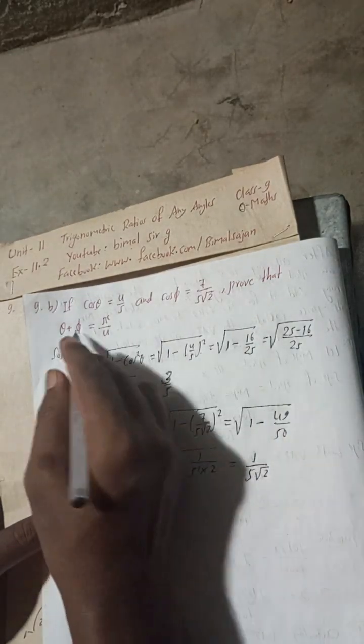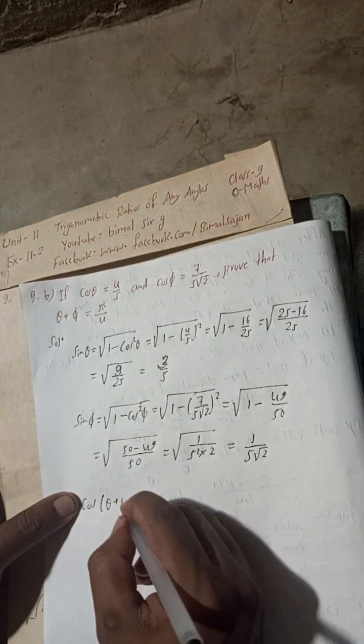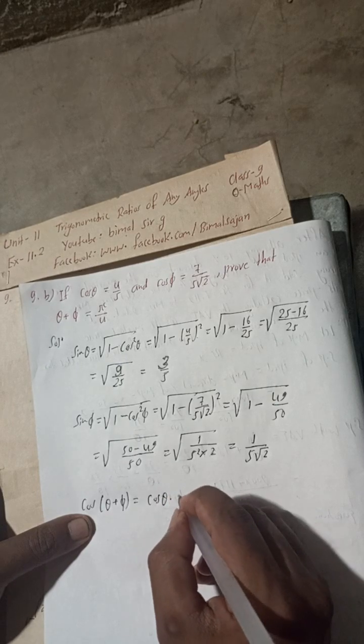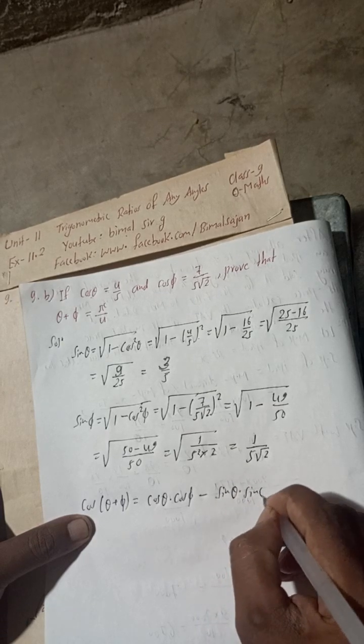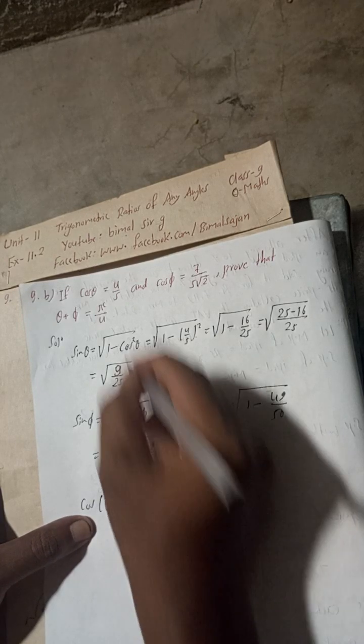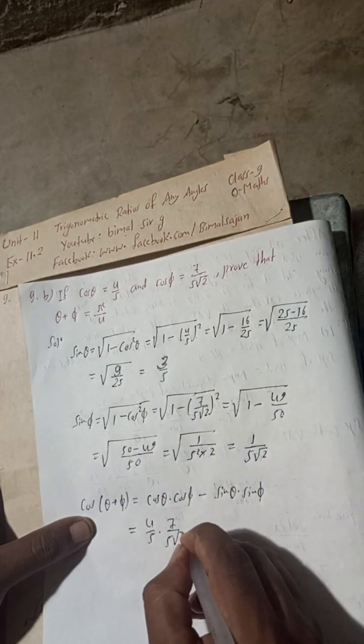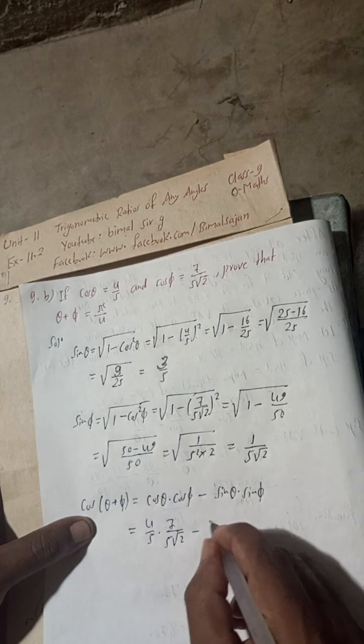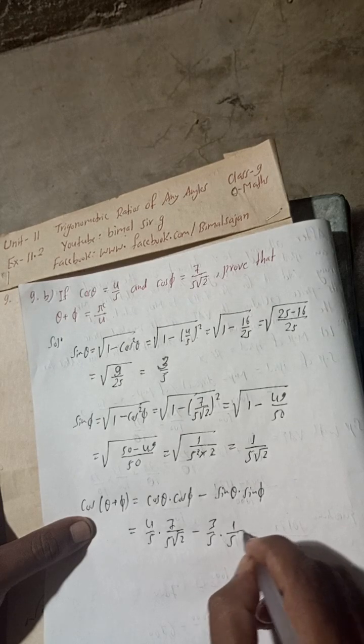Now we can write cos(θ + φ). The formula is cos(θ + φ) = cos θ × cos φ - sin θ × sin φ. So cos(θ + φ) = (4/5) × (7/(5√2)) - (3/5) × (1/(5√2)).